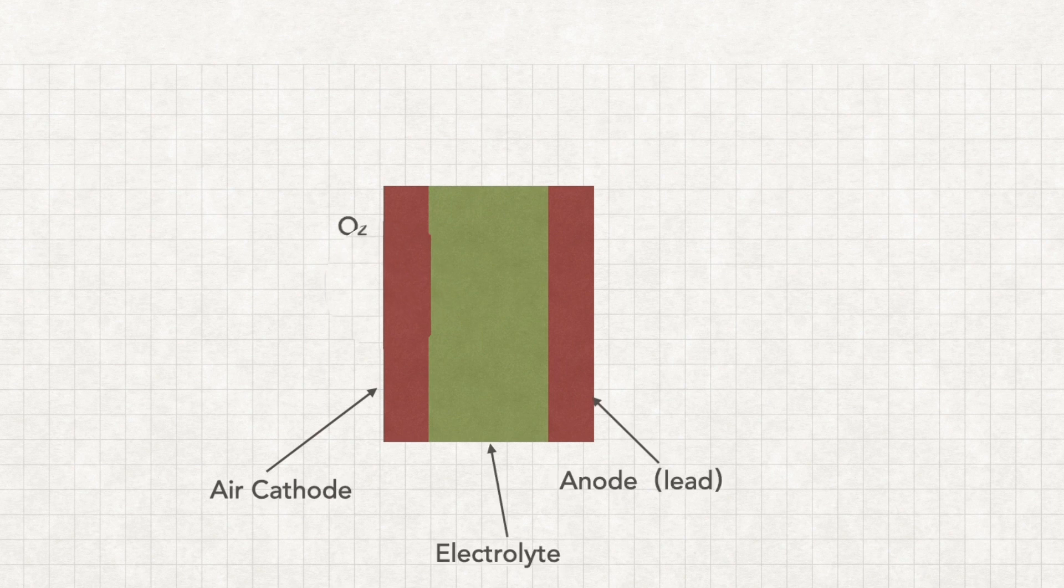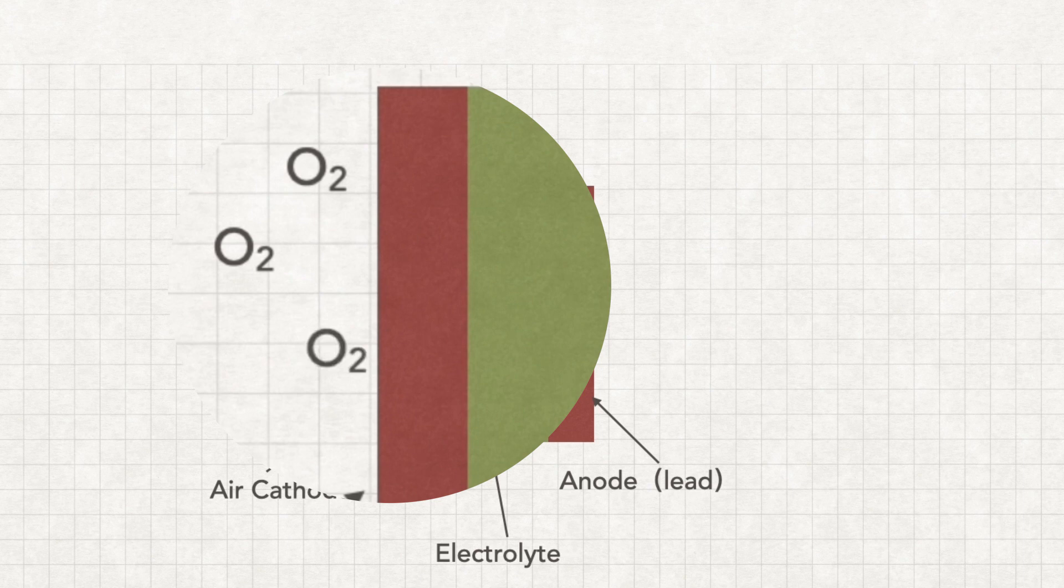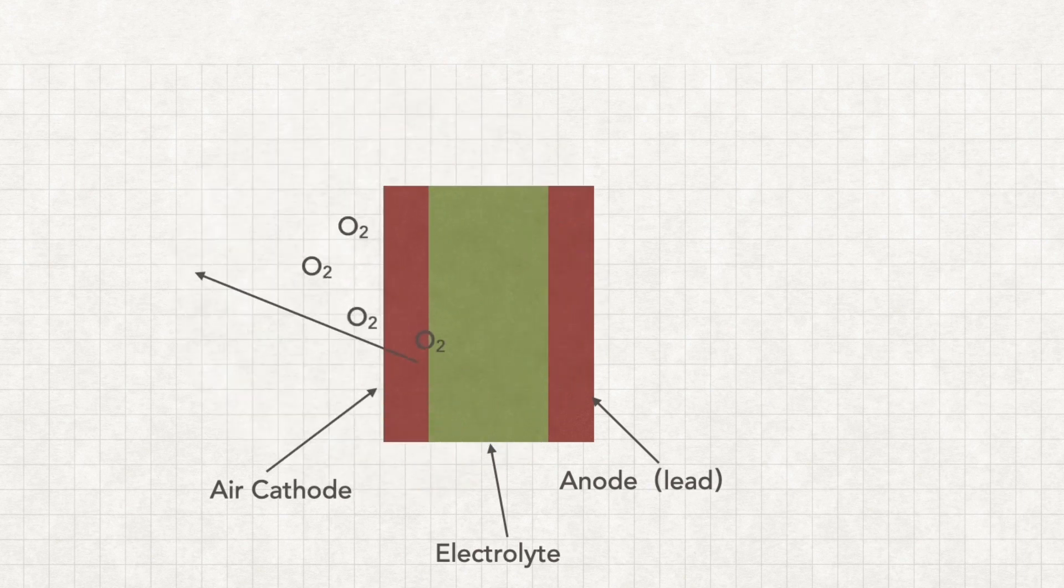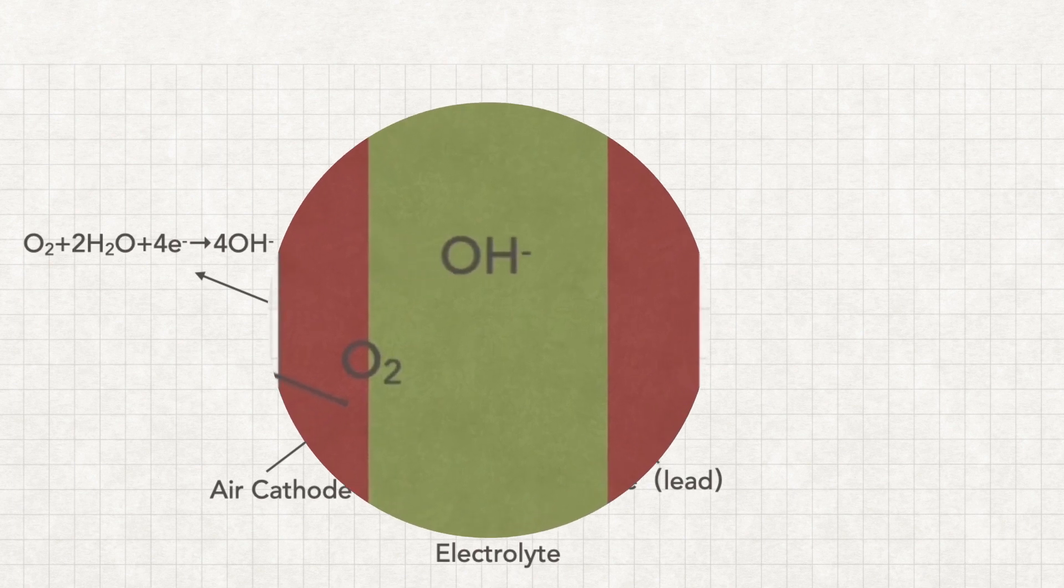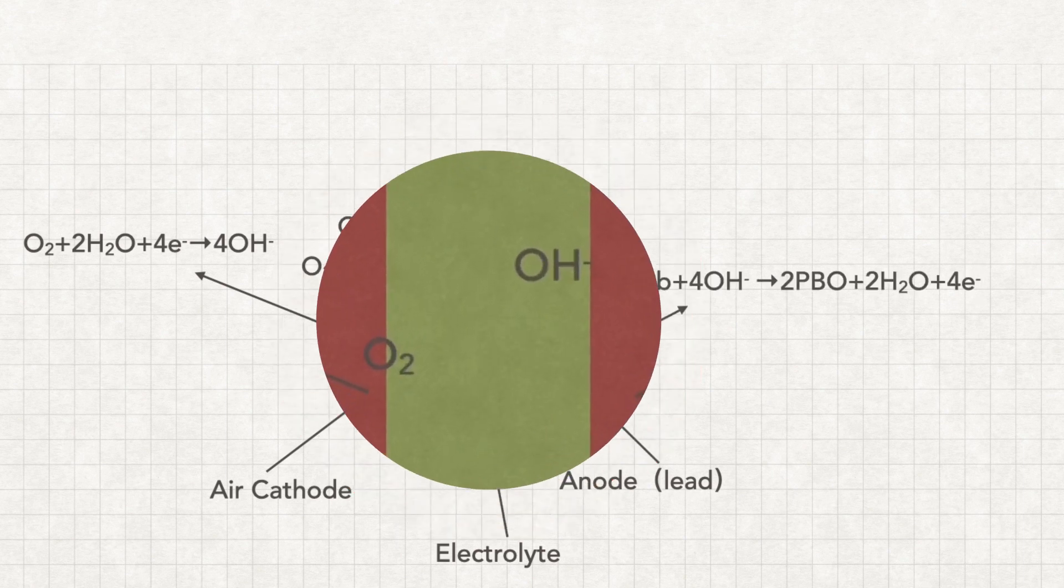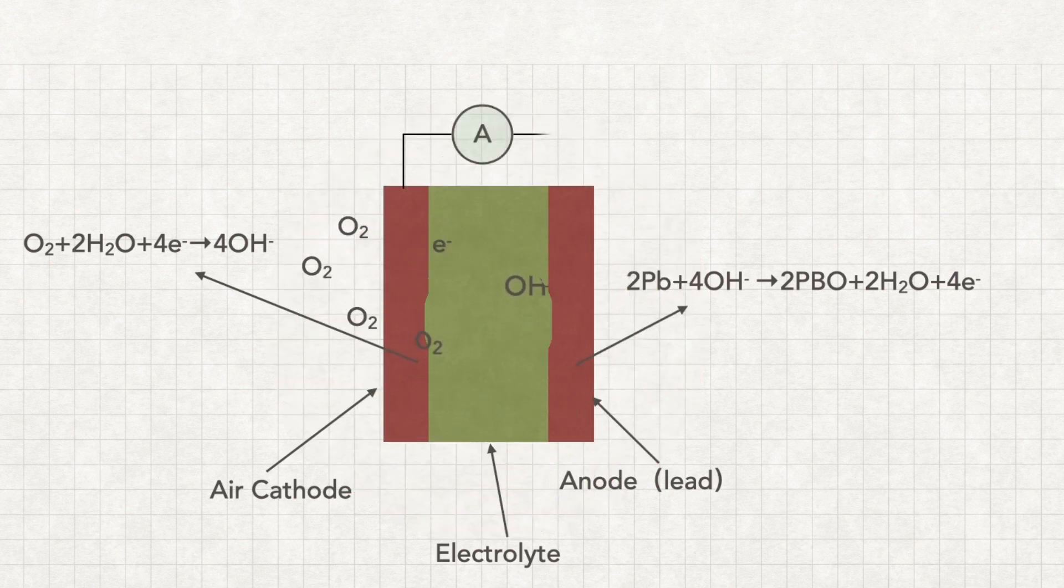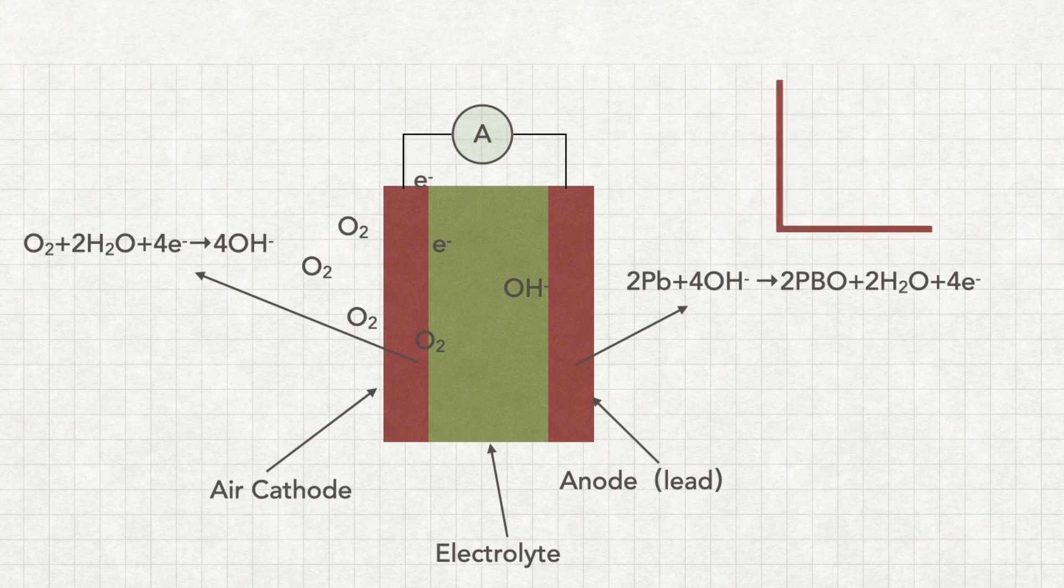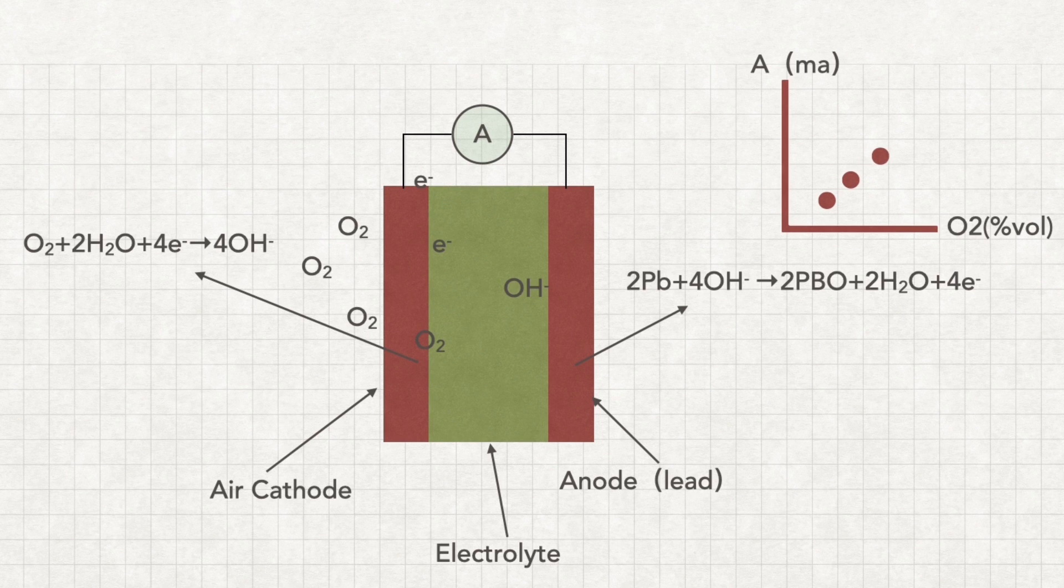When oxygen reaches the working electrode, it is immediately reduced to release hydroxide ions. These hydroxide ions pass through the electrolyte to the lead anode, where they undergo an oxidation reaction to produce metal oxide. These two reactions generate an electric current, the magnitude of which depends on the oxygen reaction rate. The current magnitude is proportional to the oxygen concentration. Thus, we get the value of the oxygen content.